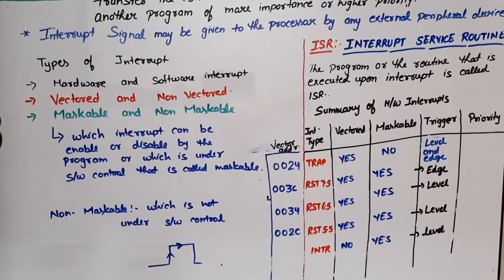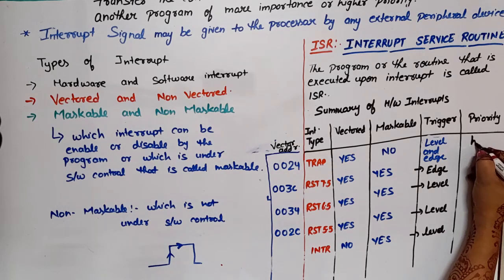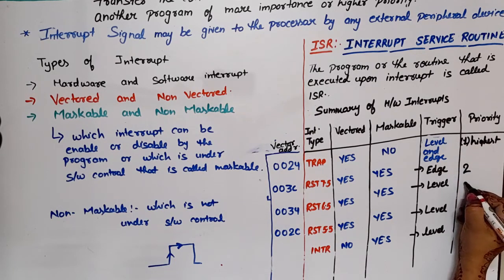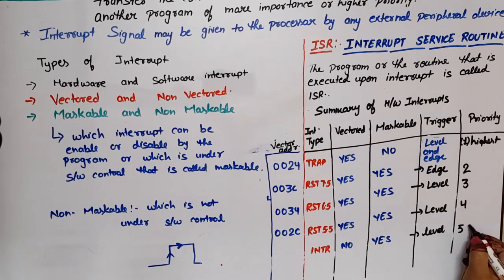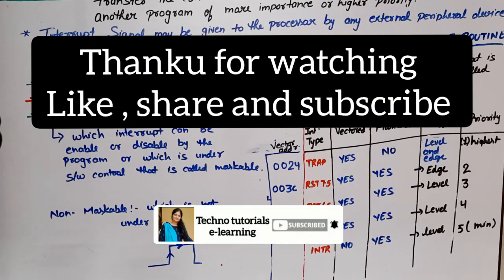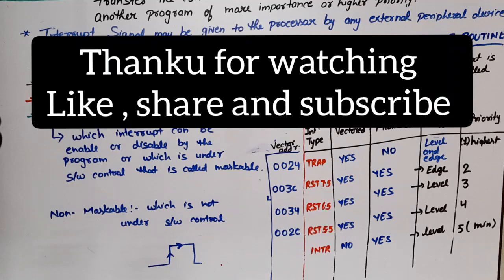Now let's talk about priority. Priority means if there are multiple interrupts, the one with the highest priority is executed first. In 8085, TRAP has the highest priority, then RST 7.5 second, RST 6.5 third, RST 5.5 fourth, and INTR has the least priority. In the next video, I will try to explain the interrupt structure. Thank you. If you have any doubt about interrupts, please write in the comment section.